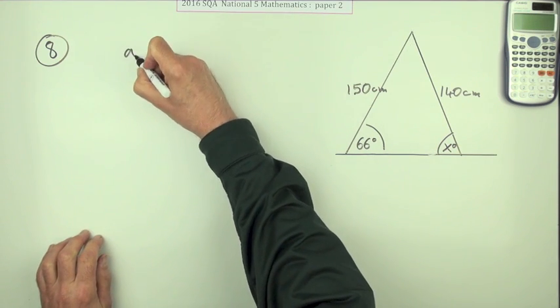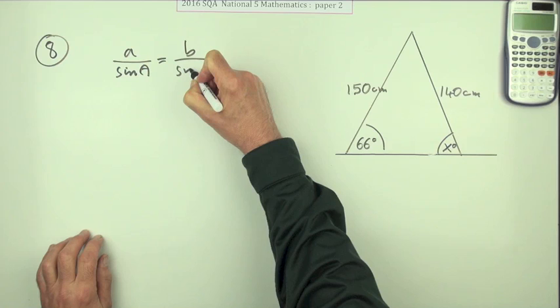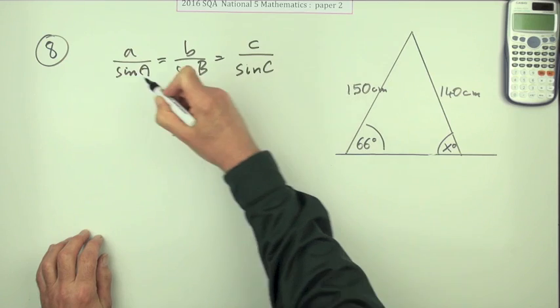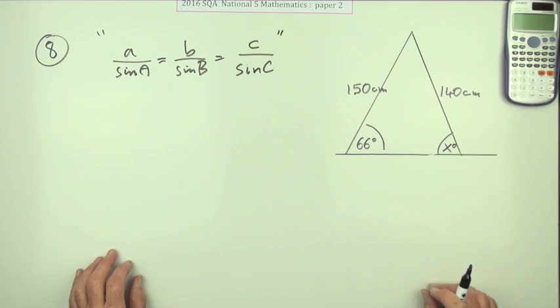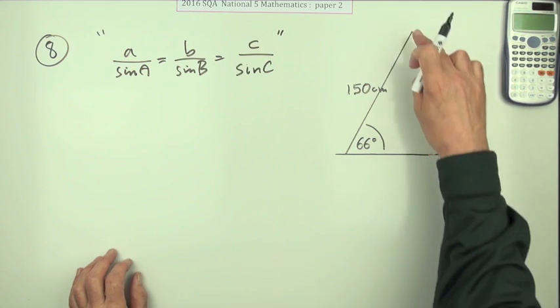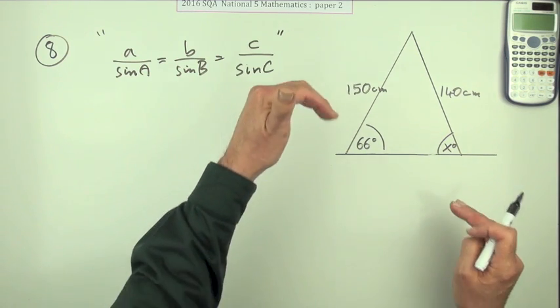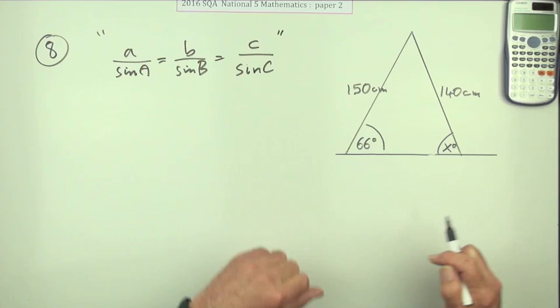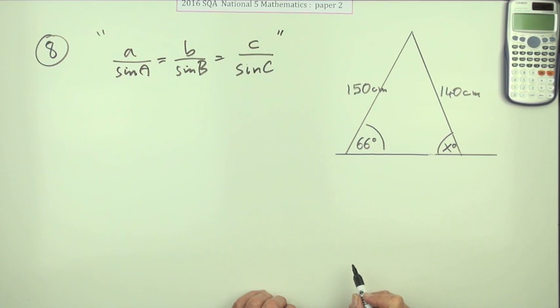You can put down the sine rule if you like. A over sine A, B over sine B, C over sine C. I'll just put it in inverted commas just to indicate that's what I'm going to use. Because you don't actually need any names at the corners, at the vertices, because it's just the configuration of the sides that matter. The sine rule works with opposite sides. The side and its opposite angle. The sine of its opposite angle.